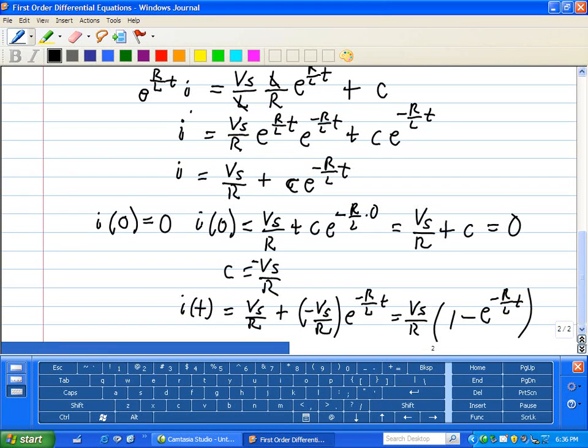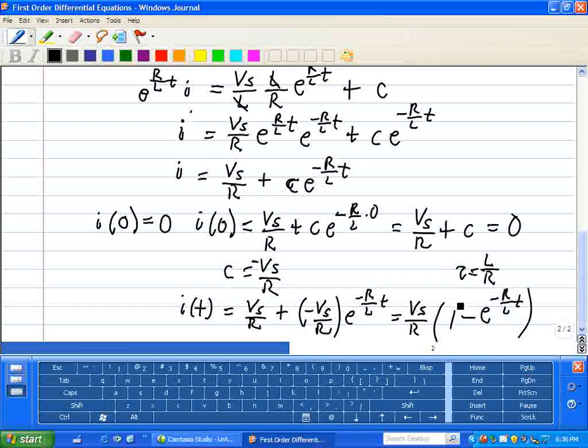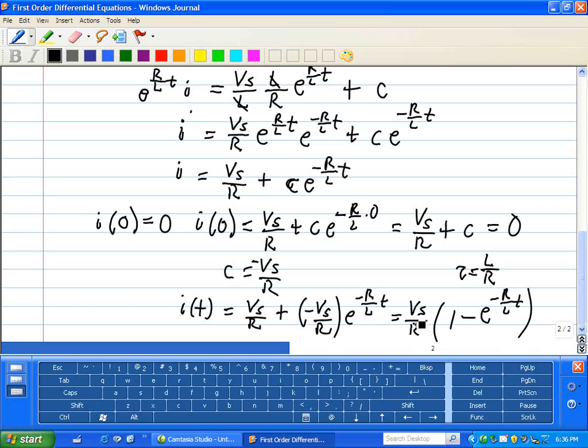In other words, after a long period of time, which is five time constants. And a time constant in this case is defined for this circuit as L over R. So after five time constants of L over R, this approaches the steady state current of Vs over R, which in essence says that the inductor is just not there. We just have basically a circuit after steady state with a resistor and no inductor.